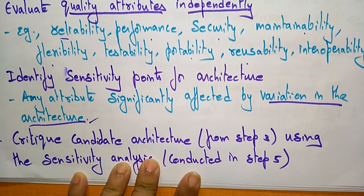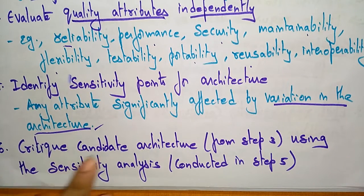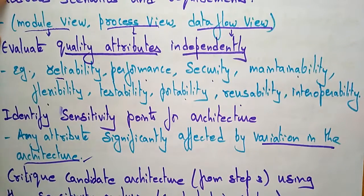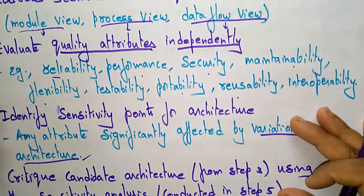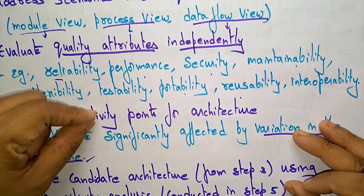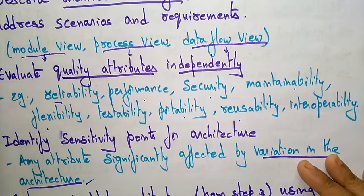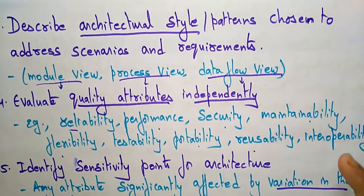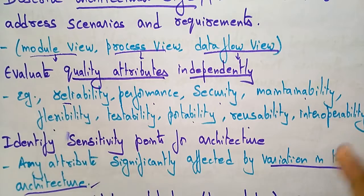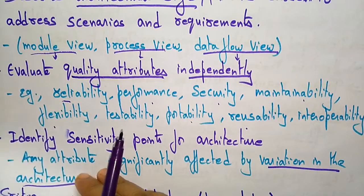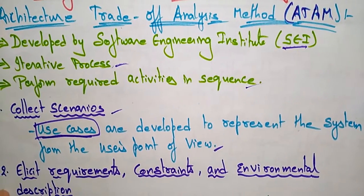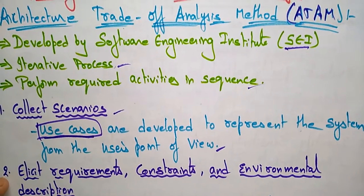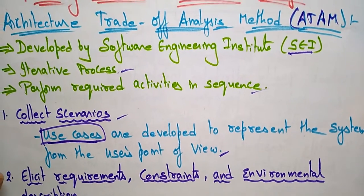Finally, the candidate architecture will be developed from step 3 — describing architectural styles — using sensitive analysis. By taking the sensitive points of the architecture into consideration, we describe and develop the architectural style. This is the assessing alternative architecture method, that is, the Architecture Trade-off Analysis Method, and these are the steps to be followed to design using ATAM.